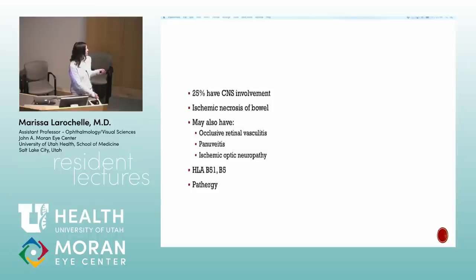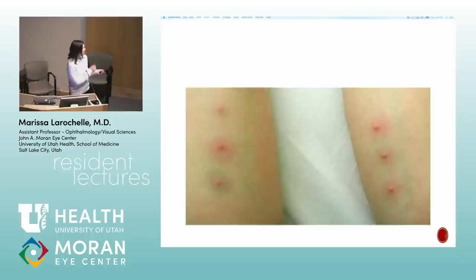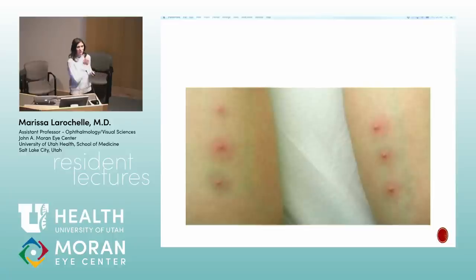For Behçet's: 25% have CNS involvement — that's why it can be fatal. HLA-B51 is associated and used as confirmatory testing, not screening. The pathergy test: inject a tiny amount of saline intradermally and check at 24-48 hours — normal patients show nothing, but Behçet's patients develop a pustule or papule. However, only a small percentage of Behçet's patients have a positive pathergy test, so a negative result doesn't rule it out.